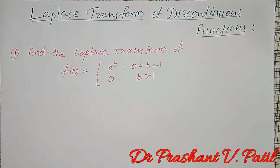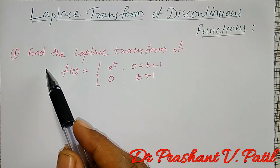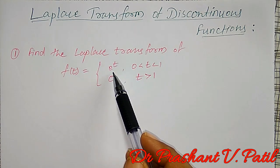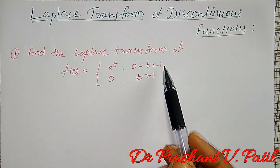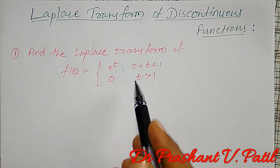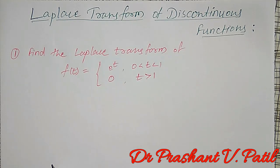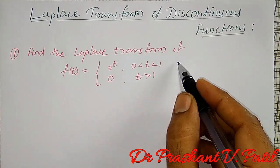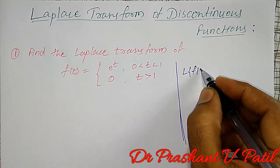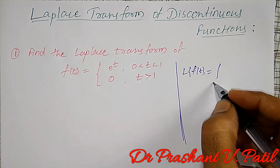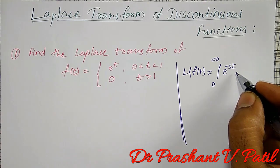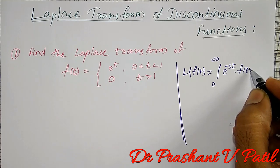The function is discontinuous here. Find the Laplace Transform of f(t) = e^t defined between 0 to 1, and 0 for t greater than 1. The Laplace Transform of f(t) is given by the integration from 0 to infinity of e^(−st) into f(t) dt.